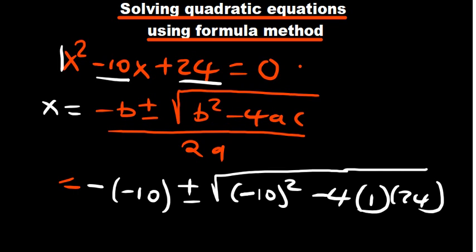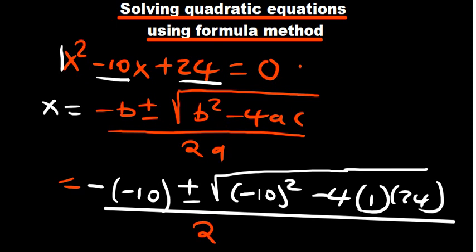All this is supposed to be divided by what? 2a. So what is our a in this case? So we have 2. Our a is 1. So it's still remaining 1 there.